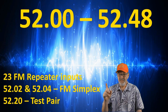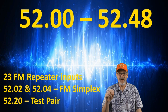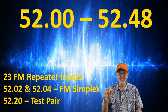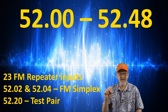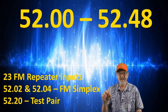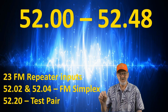23 repeater inputs can be found between 52 and 52.48 MHz. This band also includes two FM simplex channels at 52.02 and 52.04, and a test pair input at 52.2 MHz.